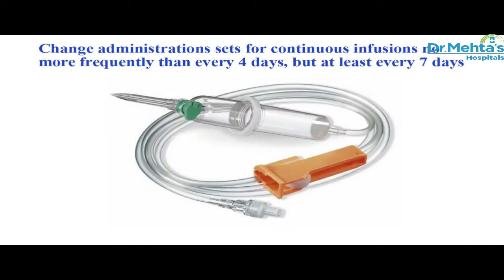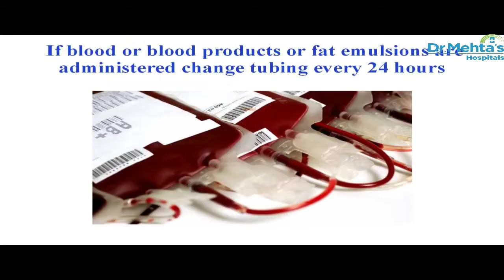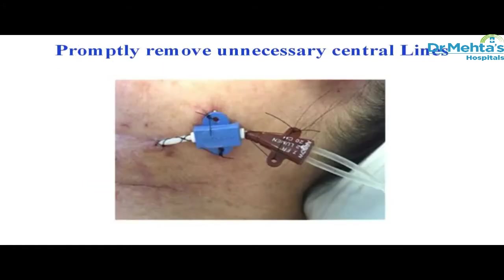Change all administration sets for continuous infusion as per the manufacturer's guidelines. If blood, blood products, or fat emulsions such as TPN are administered, change the tubing every 24 hours. When the central lines are no longer required, they must be removed immediately.